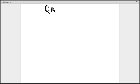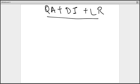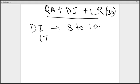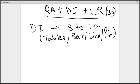In the quant plus DI plus LR section, you are going to get 8 to 10 questions from DI. DI includes tables, bar graphs, line graphs, and pie charts. To prepare for DI, you can refer to Level 1 questions of any MBA preparation book like Arun Sharma, Nishit Sinha, etc.